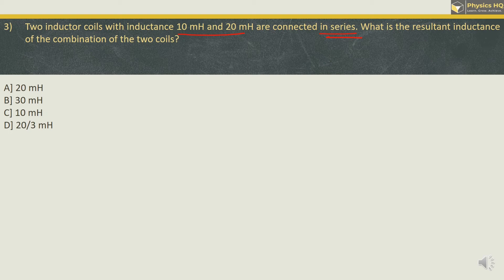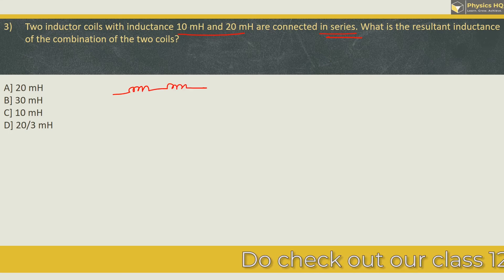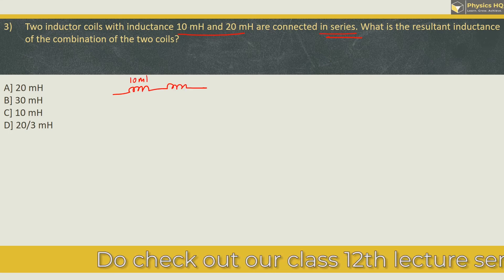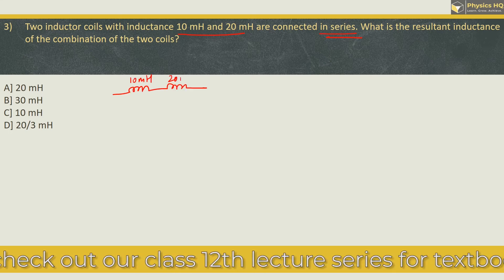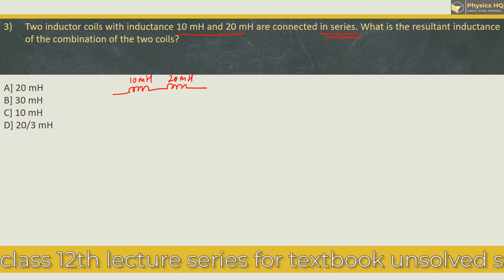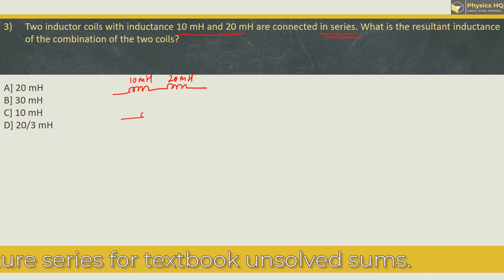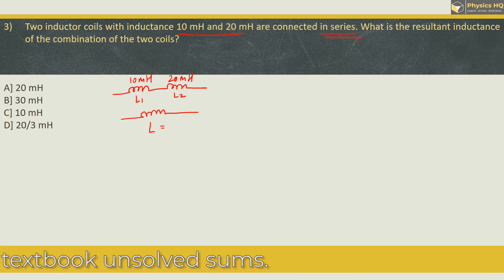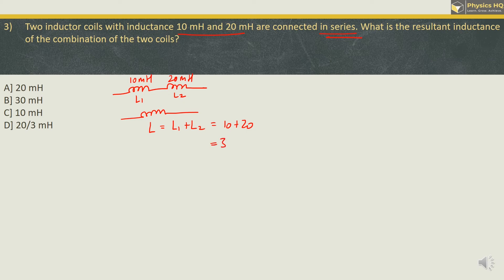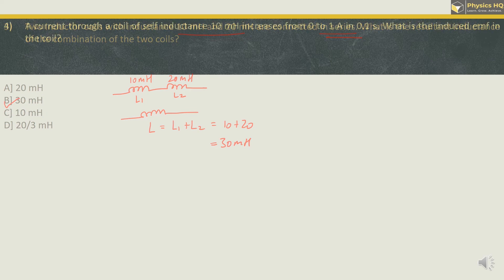So over here we have coils in series. So for coils in series, we have this setup. The first one is 10 mH and the second coil is of 20 mH. So their combination of the two coils L will be given by L1 plus L2. This will be 10 plus 20 which is 30 mH. So the correct option is option B. Let us go ahead to the next MCQ.